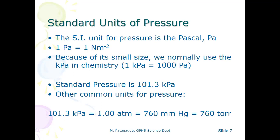The number 760 millimeters of mercury is also referred to as 760 Torr, named in honor of Torricelli. So to wrap up today: 101.3 kPa equals one atmosphere equals 760 millimeters of mercury equals 760 Torr. Make sure you have those numbers written down before we move on to pressure conversions.